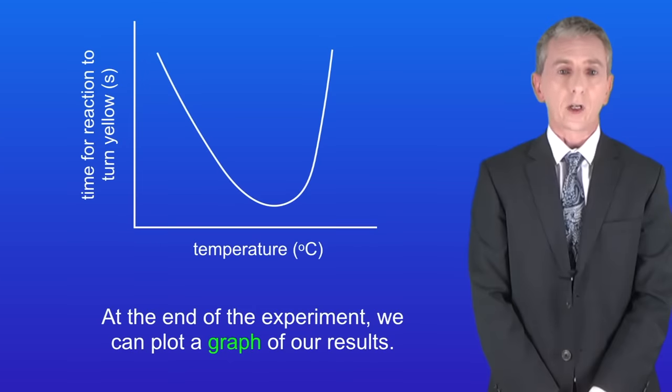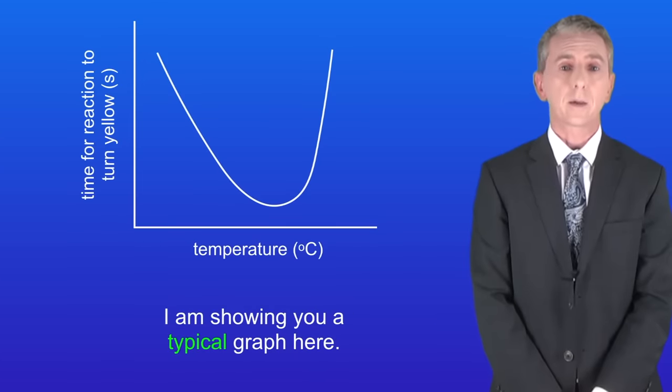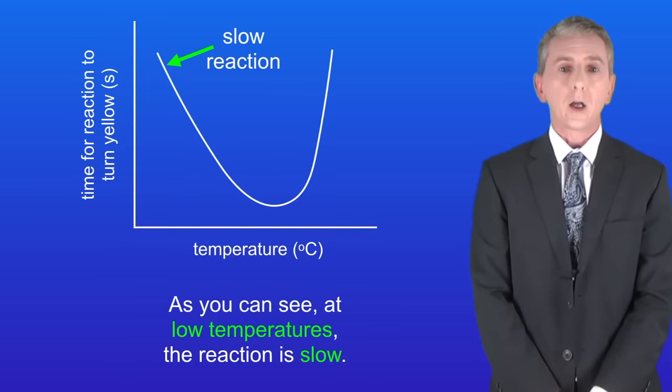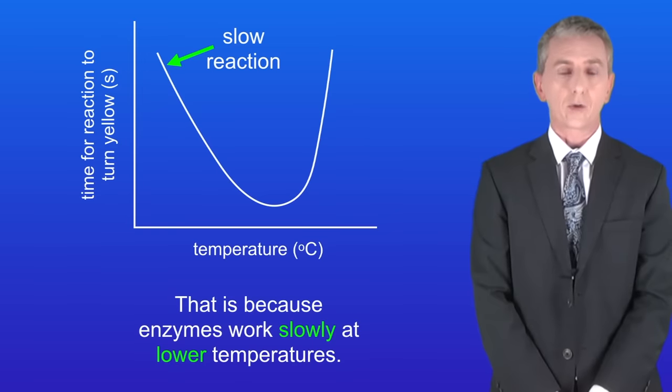At the end of the experiment, we can plot a graph of our results, and I'm showing you a typical graph here. As you can see, at low temperatures the reaction is slow. That's because enzymes work slowly at lower temperatures.